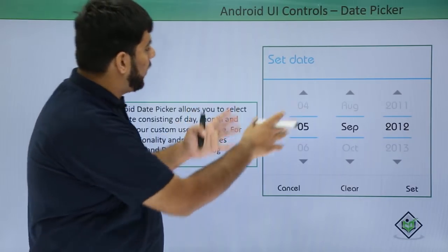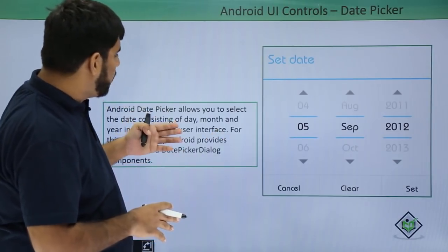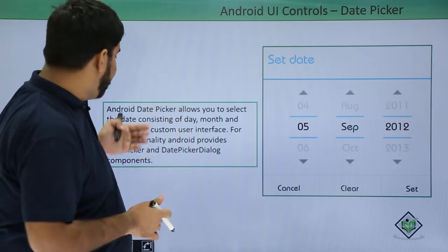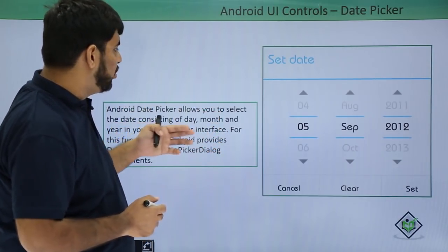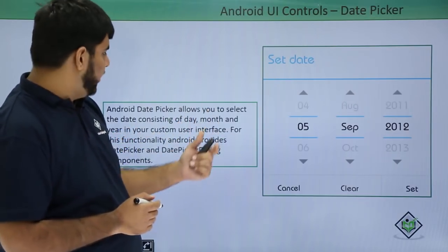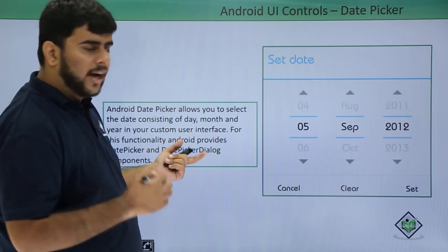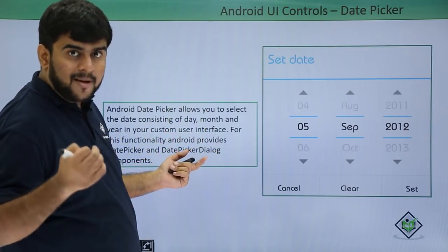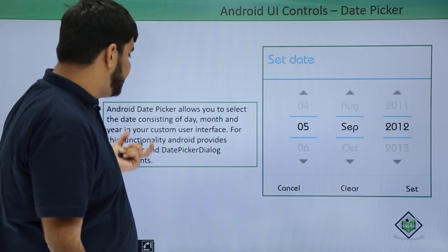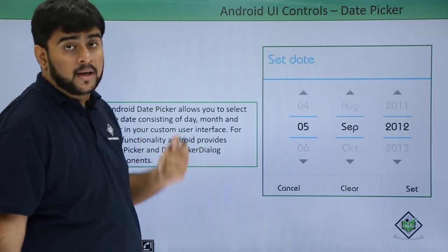This is what the date picker looks like. A date picker is an option that allows the user to select a date consisting of the day, month, and year in a custom user interface. We actually have two ways to implement a date picker: one is the date picker itself and the second is the date picker dialog.